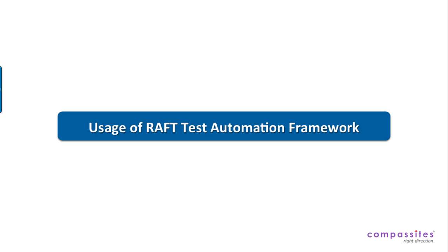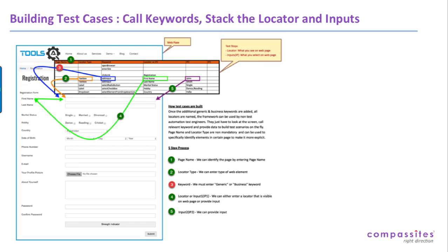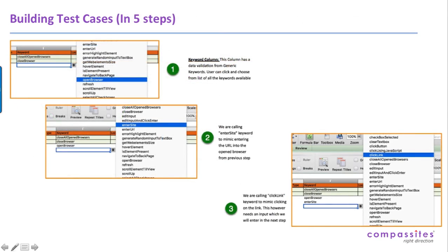Now let's look at the usage of RAFT. RAFT is very intuitive — all you have to do is look at the screen and build it like a story. For a text box labeled 'First Name,' a user selects the keyword 'Edit Input' and enters the value 'John.' Each test case forms a story: edit input first name John, edit input last name Smith, select radio button marital status single, select checkbox hobby dancing and reading, and so on. RAFT also provides a set of reusable keywords accessible via dropdown in the columns.